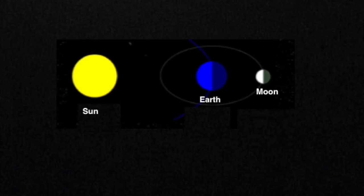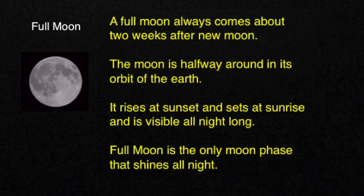When the moon reaches the point in its orbit where the Earth is between the Sun and the moon in a line like this, the Sun will illuminate the entire side of the moon that's facing us here on Earth, and this is when we see the full moon. The full moon always comes about two weeks after the new moon. The moon rises at sunset and sets at sunrise, and is visible all night long — it is the only moon phase that shines all night.